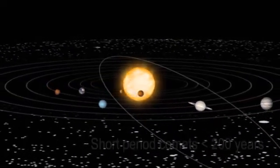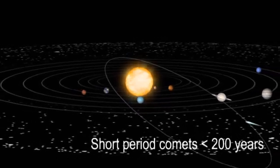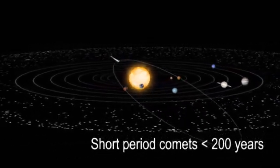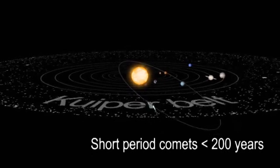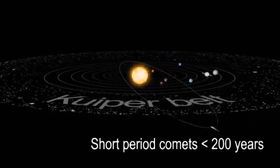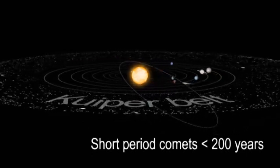Comets with periods of 200 years or less are called short period comets. Short period comets are from a region beyond the orbit of Neptune called the Kuiper Belt. The Kuiper Belt is home to comets, asteroids, and dwarf planets.